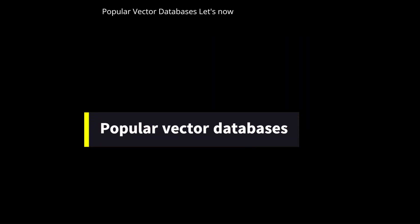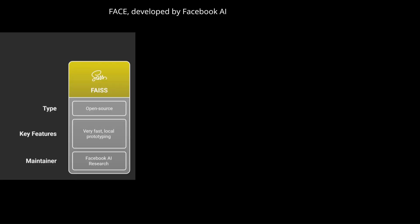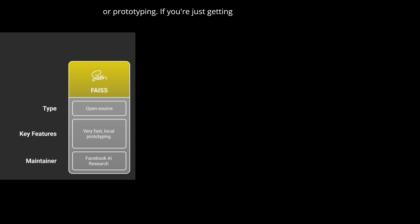Let's look at some of the most popular vector databases used in generative AI and RAG systems. First up is FAISS, developed by Facebook AI Research. It's open-source, blazing fast, and perfect for local experiments or prototyping. If you're just getting started or building a lightweight solution, FAISS is a great choice.